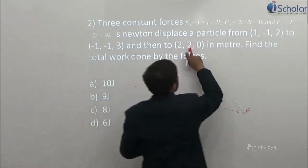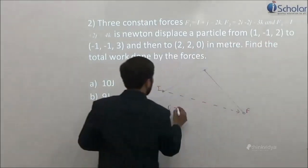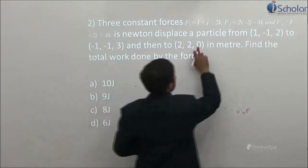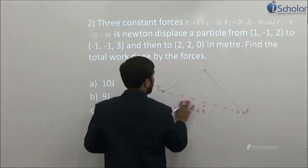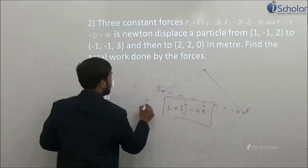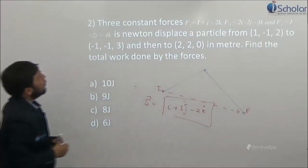So what is the displacement? 2 minus 1 i, 2 minus minus 1 plus 3 j, 0 minus 2 minus 2 k. You got that or not? This is your displacement.